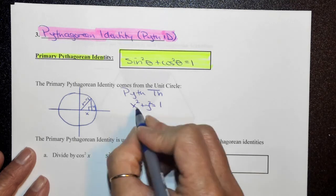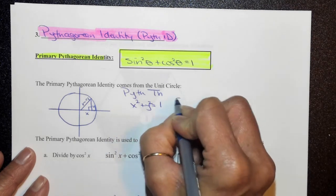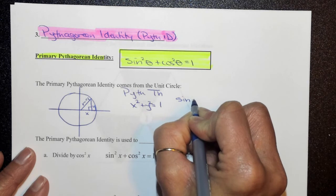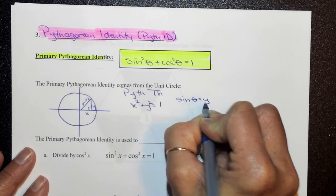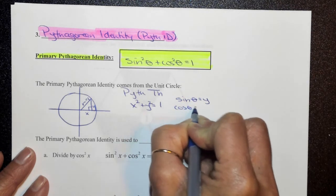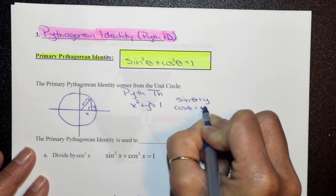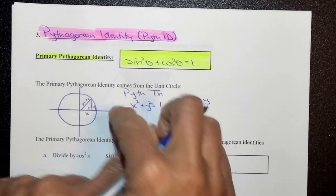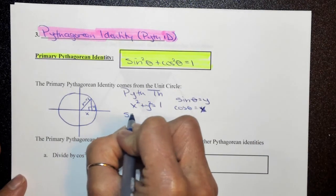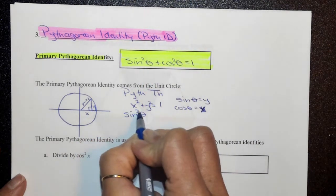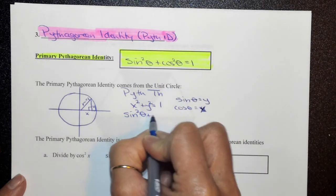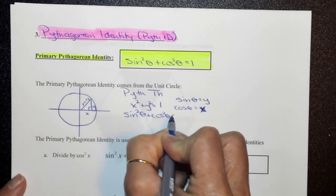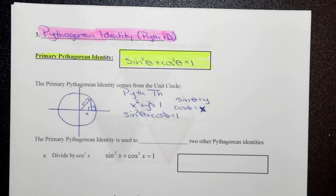So then we made the replacement for the sine of theta was our y, and the cosine of theta was our x. So then I made the replacement here, and this was switched. So we said sine squared theta, which it doesn't really matter because of the sum, plus the cosine squared is equal to 1, so that was our primary identity.